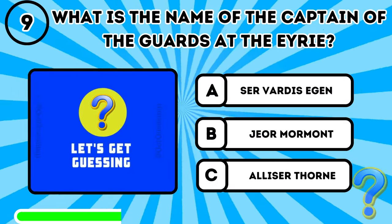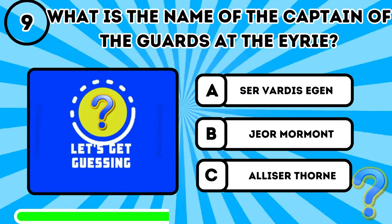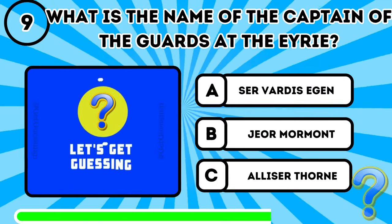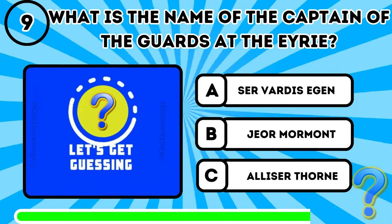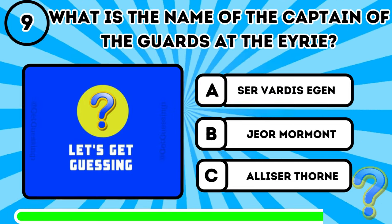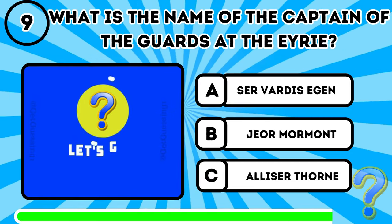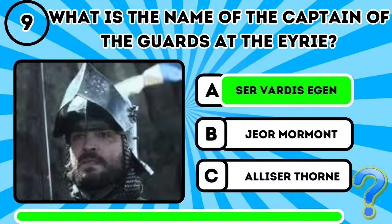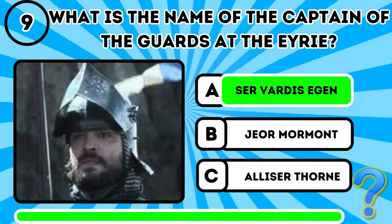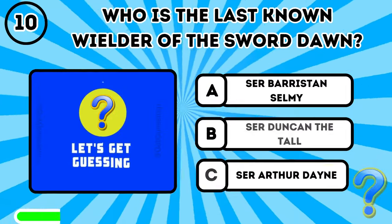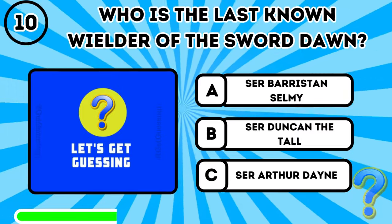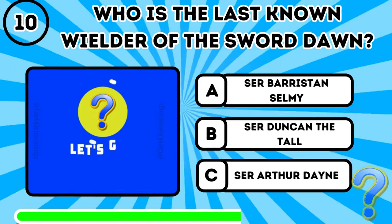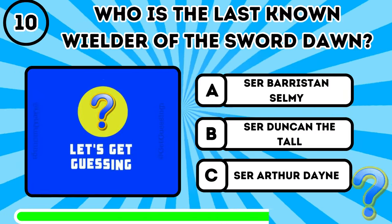Question 9: What is the name of the captain of the guards at the Eyrie? The answer is A, Ser Vardis Egan. Question 10: Who is the last known wielder of the sword Dawn?